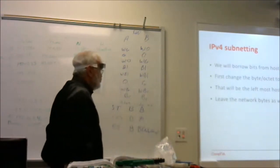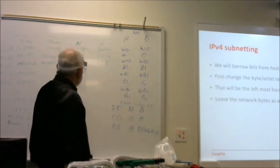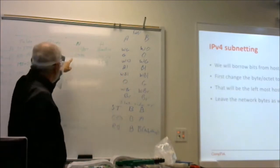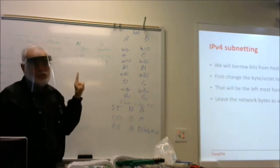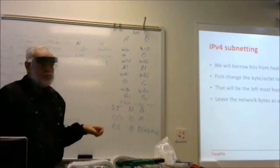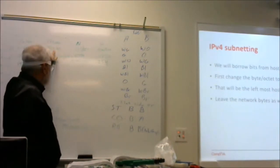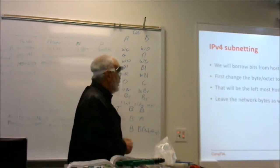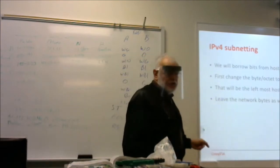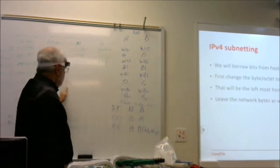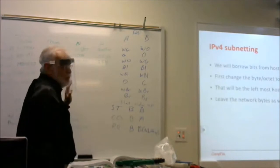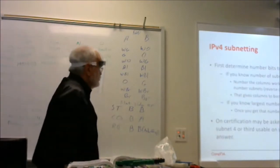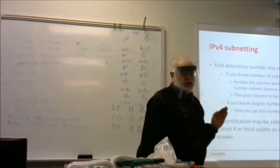If we've got multiple octets for host — our Class A address has about three of them — we're going to be working with the leftmost one. In this case, there's only one octet for the host, so there's not any choice on it. We're going to leave the network bytes or octets as they were. The stuff to the left is the network bytes — that's not being touched. The first thing we've got to determine is how many bits do we need to borrow.